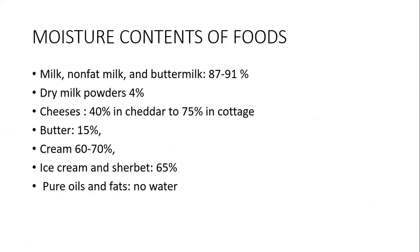Here are some established moisture contents of food. For milk, non-fat milk, and buttermilk, water content can vary up to 1%. Dry milk powders contain about 4% water. Cheeses range from 40% moisture in cheddar to 75% in cottage cheese. In soft cheeses, moisture content is high and we classify them on the basis of texture: soft, medium, and hard. Butter contains 15% moisture, cream 60 to 70%, ice cream and sherbet 65%, and pure oils and fats have practically no water.